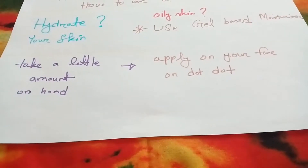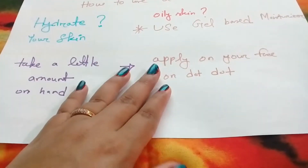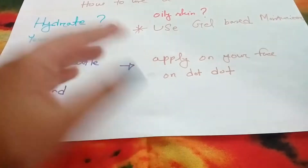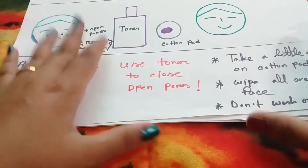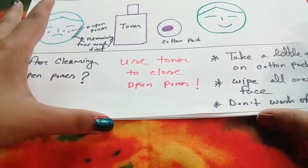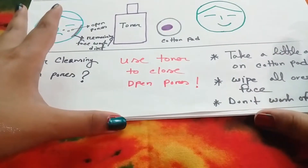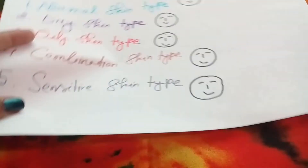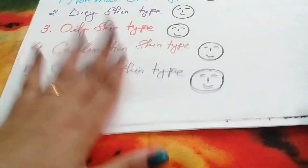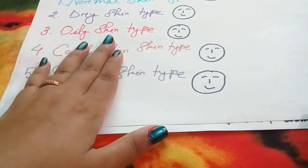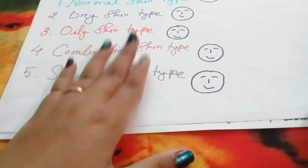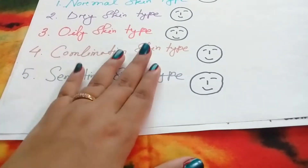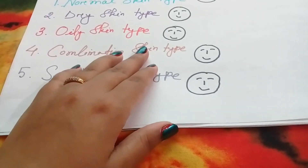After using the Moisturizer, you can apply sunscreen. So these were the basic things about CTM that I have shared with you. After CTM, another question is about skin types. If you want a video about which skin type and face wash to use, please tell me in the comment box.